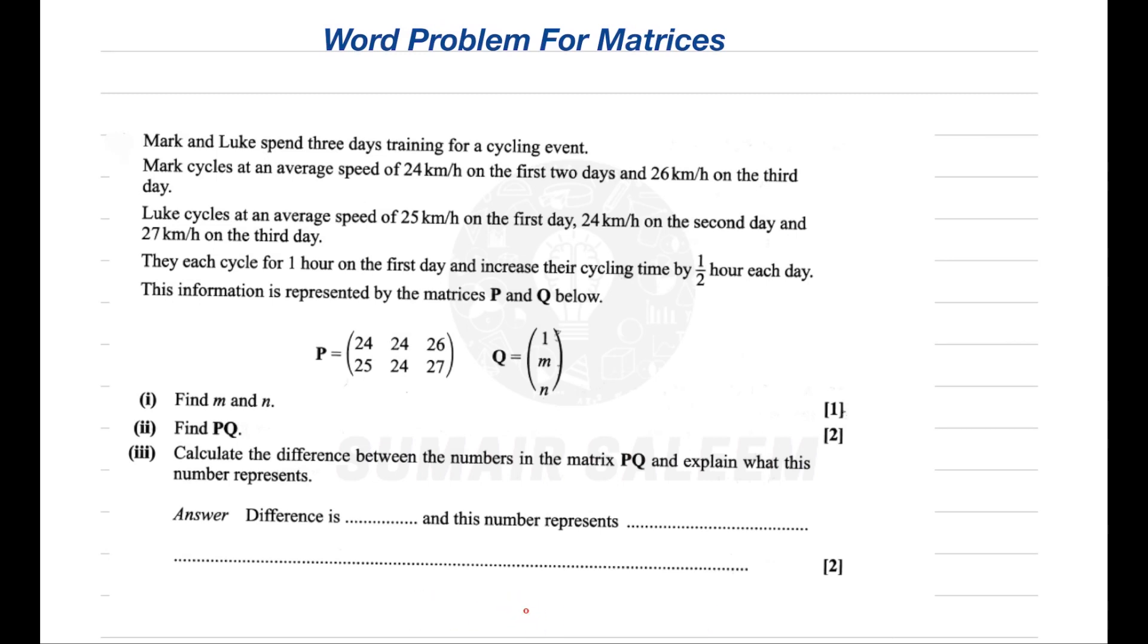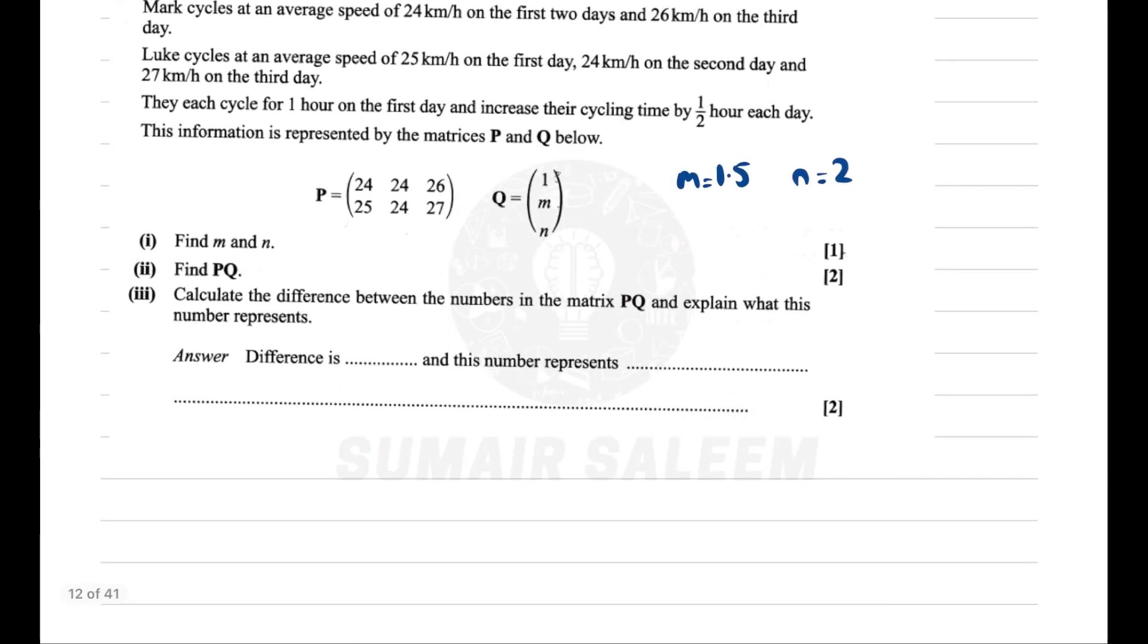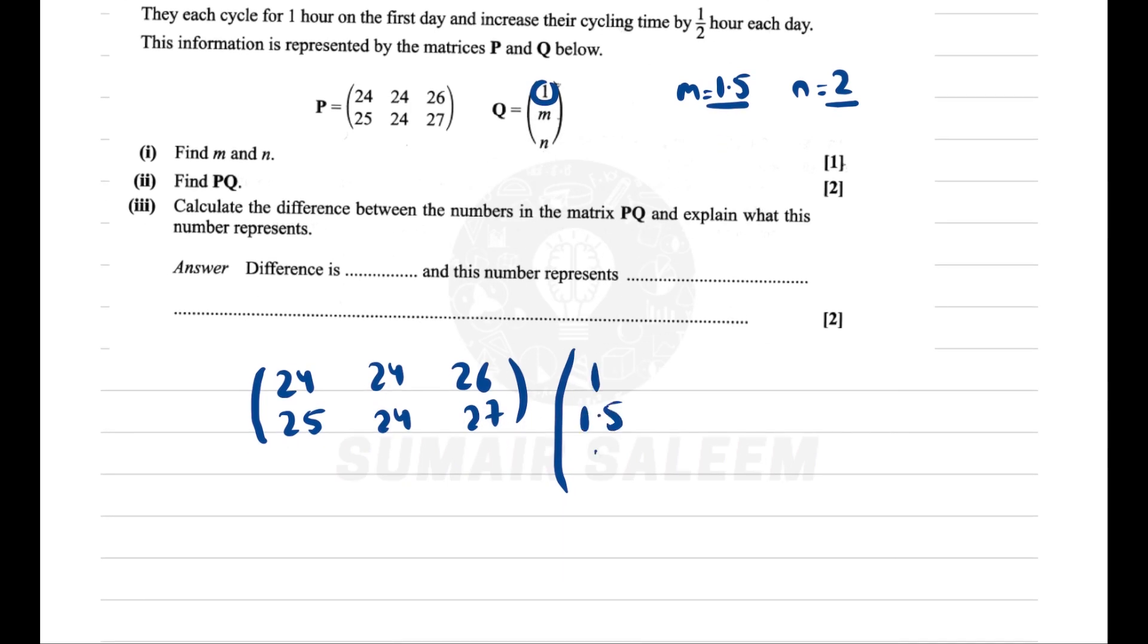Mark and Luke spent three days training for a cycling event. Mark cycled at an average speed of 24 km/h on the first two days and 26 on the last day. Luke's speeds were different. They each cycled for 1 hour on the first day and increased their cycling time by half an hour each day, so the time values are 1, 1.5, and 2. The speeds are 24, 25, 24, 24, 26, 27, and I'm going to multiply by 1, 1.5, and 2.